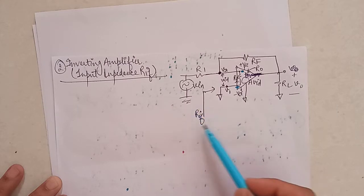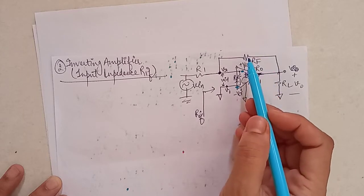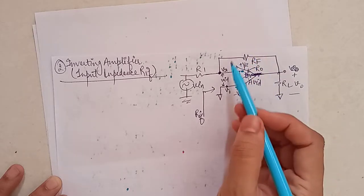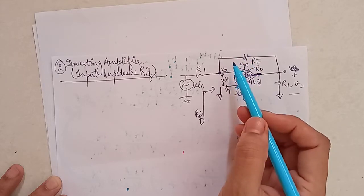We need to calculate RIF here. Now if you want to calculate RIF, then this RF resistance, we need to use Miller's theorem for this feedback resistor RF which can be split into two parts, one at the input side and other at the output port.